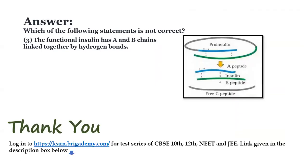Coming back to the question — which of the statements is not correct? The answer is option 3: the functional insulin has A and B chains linked together by hydrogen bonds. This is incorrect because the bonds are not hydrogen bonds — they are disulfide bonds.